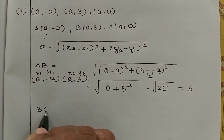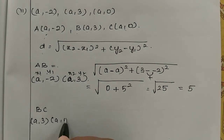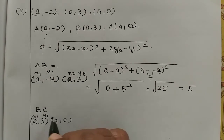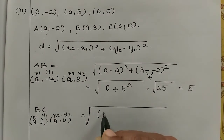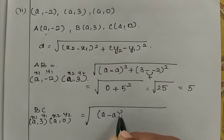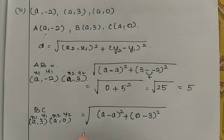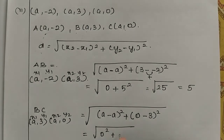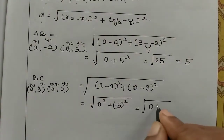Next, BC: B is (a, 3), C is (a, 0), x1 y1 x2 y2. Which equals root of (x2 is a minus x1 is a) the whole square, plus (y2 is 0 minus y1 is 3) the whole square. So a minus a is 0, 0 squared plus 0 minus 3 is minus 3, the whole square, which equals root of 0 plus 9.